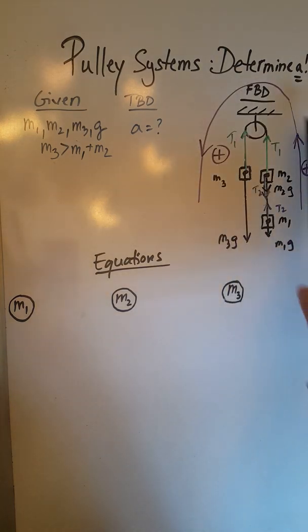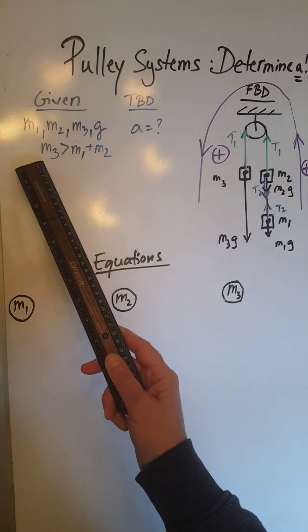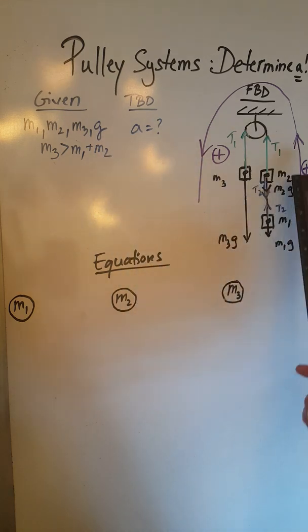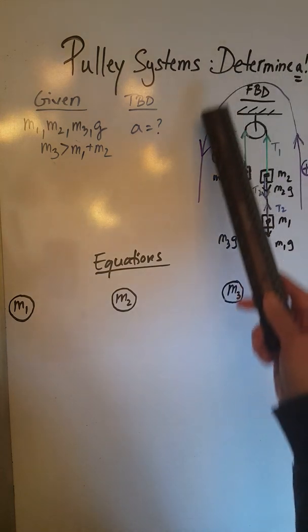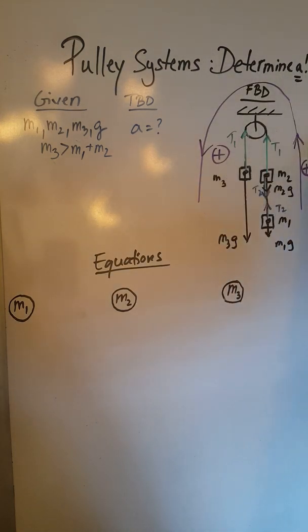This is another Atwood machine that now has three objects M1, M2 and M3, and the condition given is that M3 is greater than M1 plus M2. Because M3 is greater than the sum of M1 and M2, this whole system will accelerate counterclockwise, which is going to become our positive direction automatically.